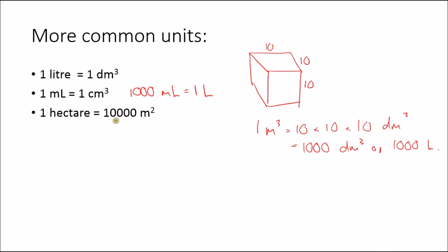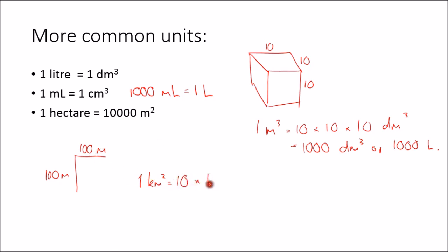For area, what we tend to use more often than square kilometers — although square kilometers are pretty common — is the hectare. The hectare is 100 meters times 100 meters, giving a total of 10,000 square meters. If you think about how many hectares are in a square kilometer: 1 kilometer is 10 times 100 meters in each direction, so applying the conversion factor squared, 1 square kilometer is 100 hectares.